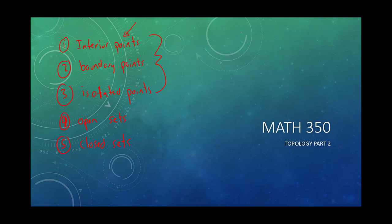We give these terms mathematical precision. A point is an interior point if there exists an open ball or open disk centered at that point that is still contained within our set G. Boundary points are points such that any open disk centered at them contains both a point inside the set and a point outside the set — meaning you're at the boundary, at the precipice.